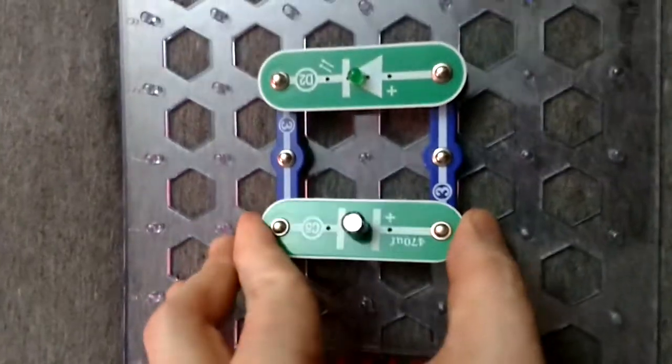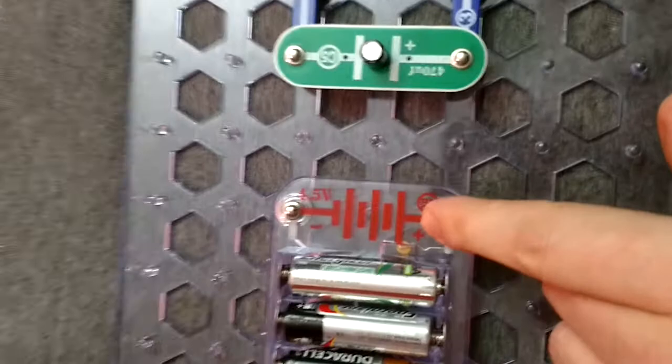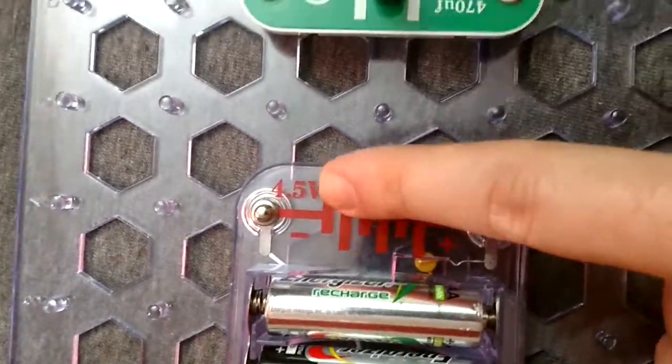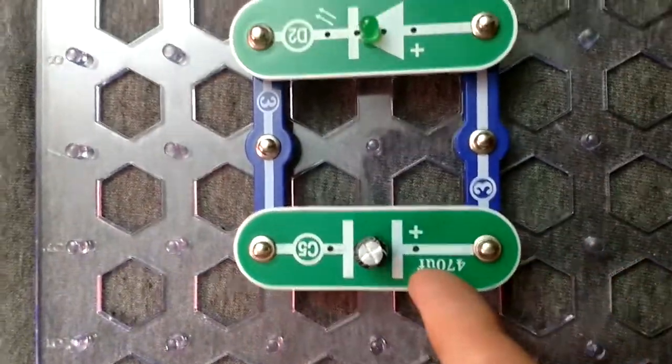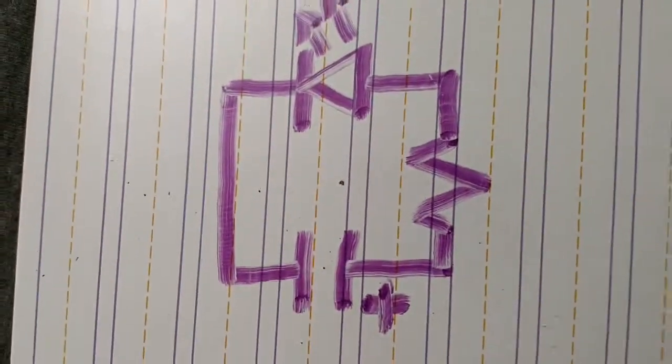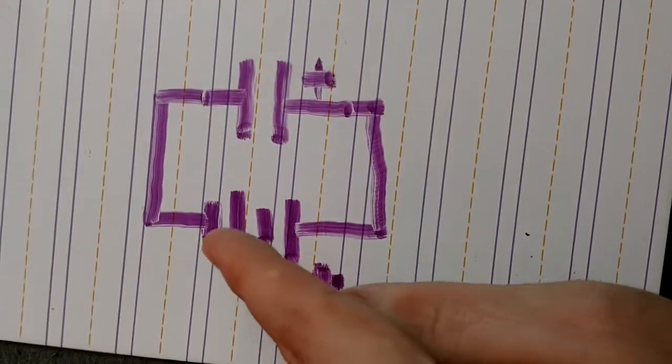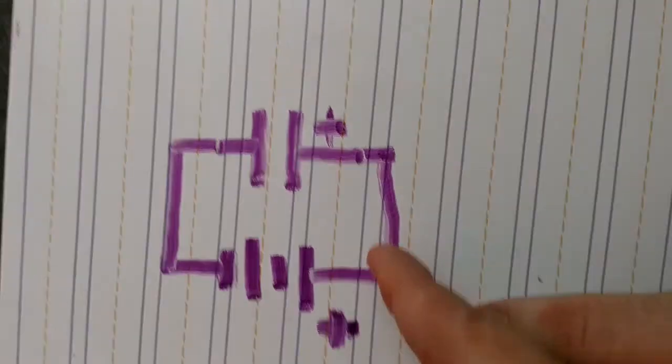You'll notice that these components also have these symbols on there: that's the schematic symbol for a battery, the symbol for the capacitor, and the symbol for the LED with the light emitting out. So if you wanted to draw it without all the extra stuff, there's our battery charging up our capacitor.